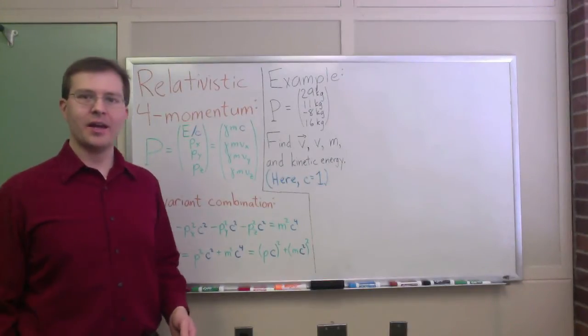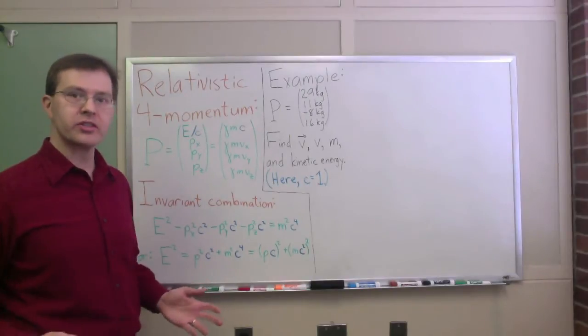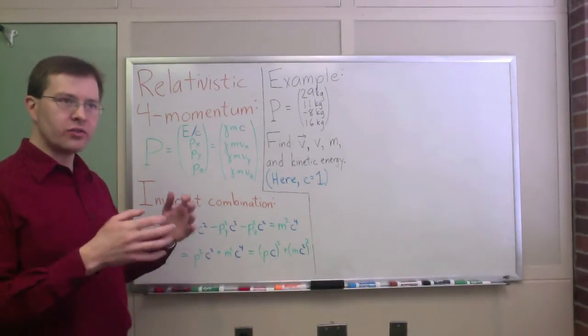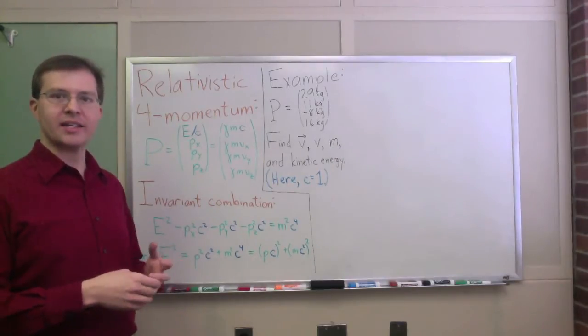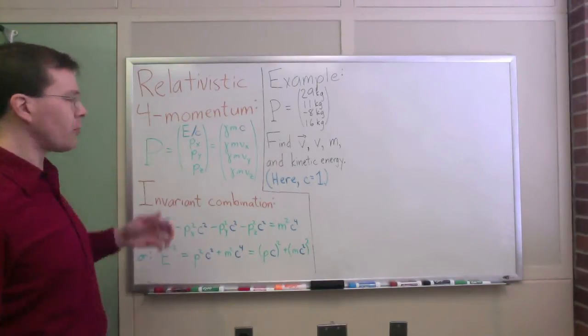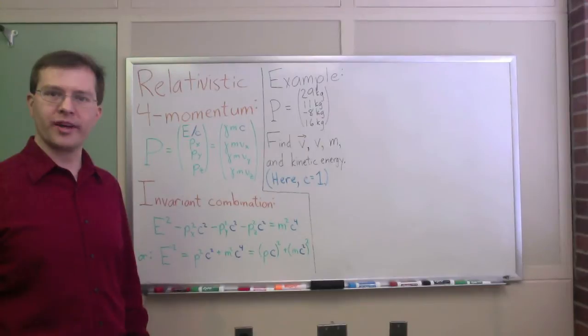We've been studying relativity, and one of the things we've been studying recently is the idea of four-momentum. Four-vectors in general in relativity combine time and space into one unified idea, one unified object, in the same way that ordinary vectors combine x, y, and z into a unified object. And the four-momentum is a classic example, and a very useful example, of a four-vector in relativity.